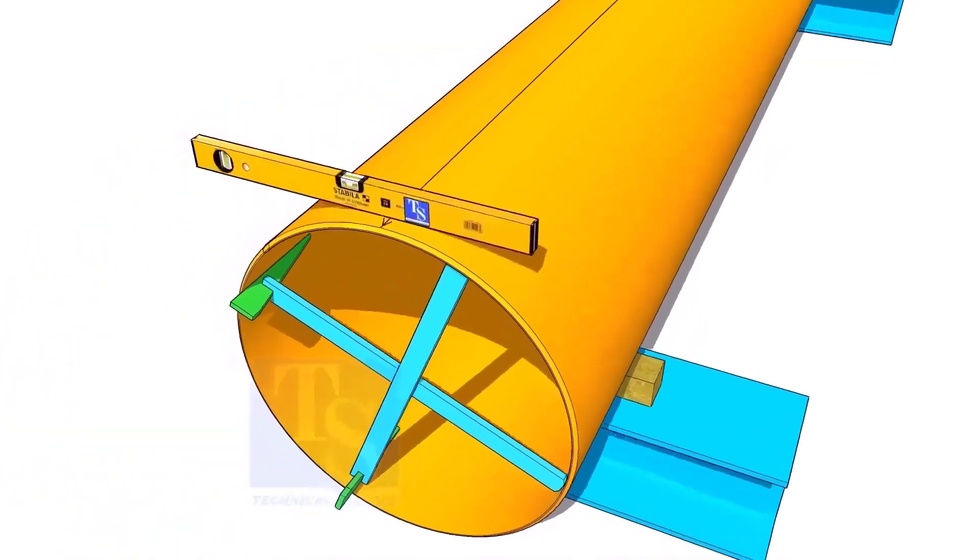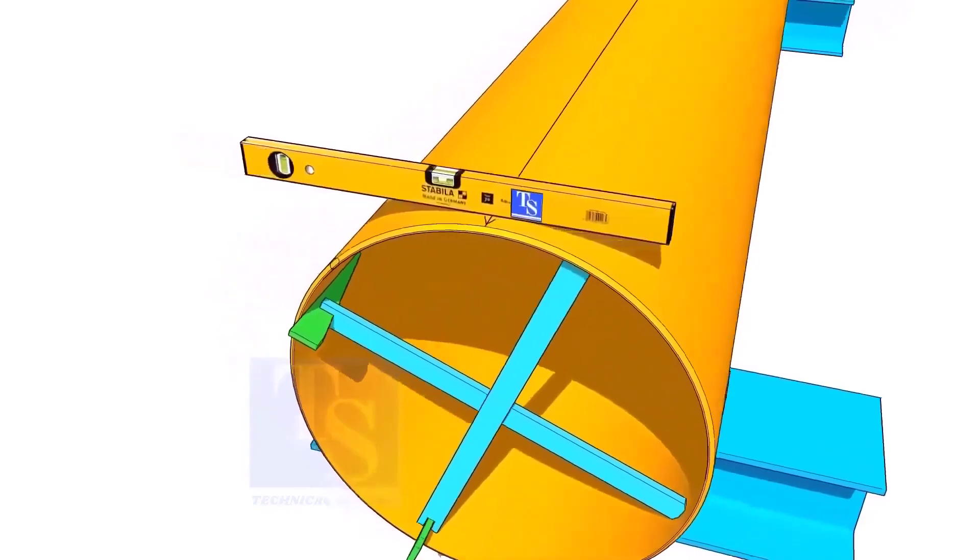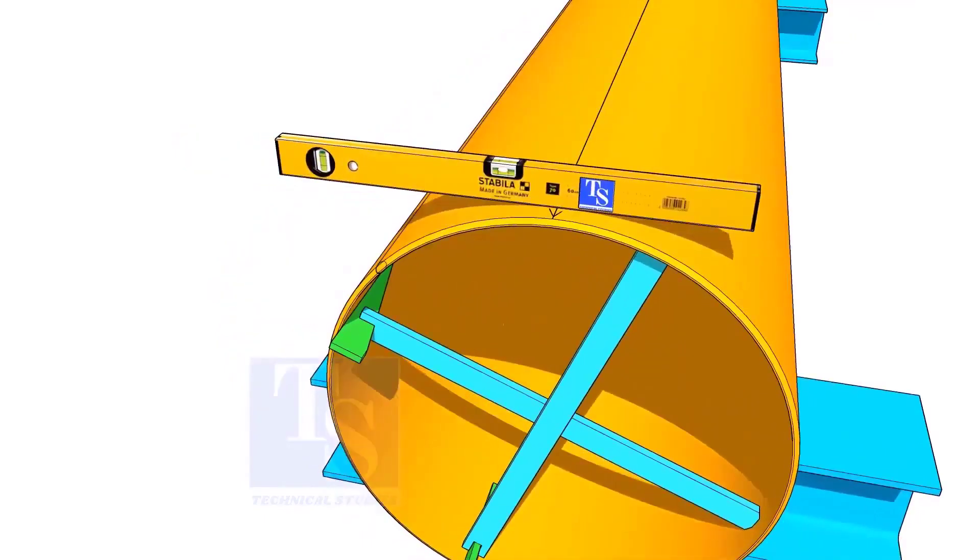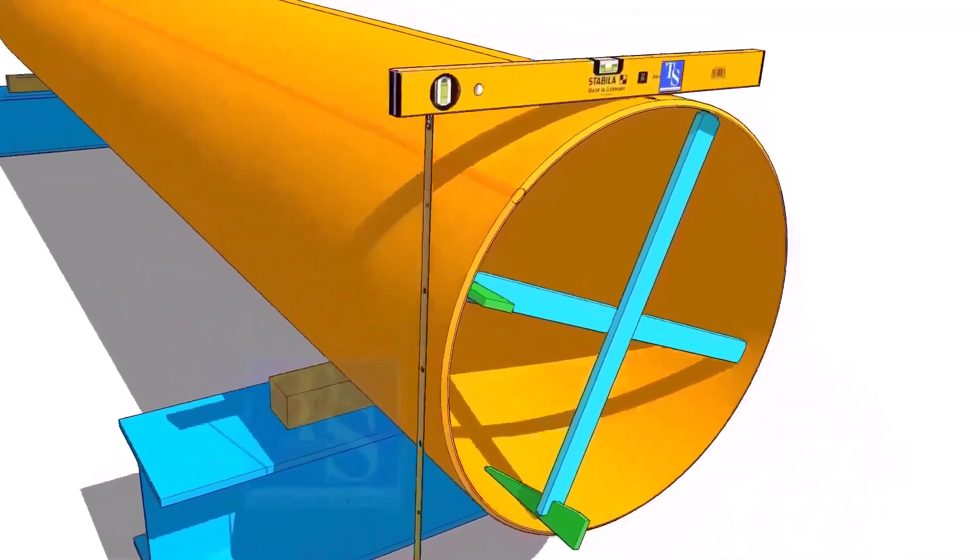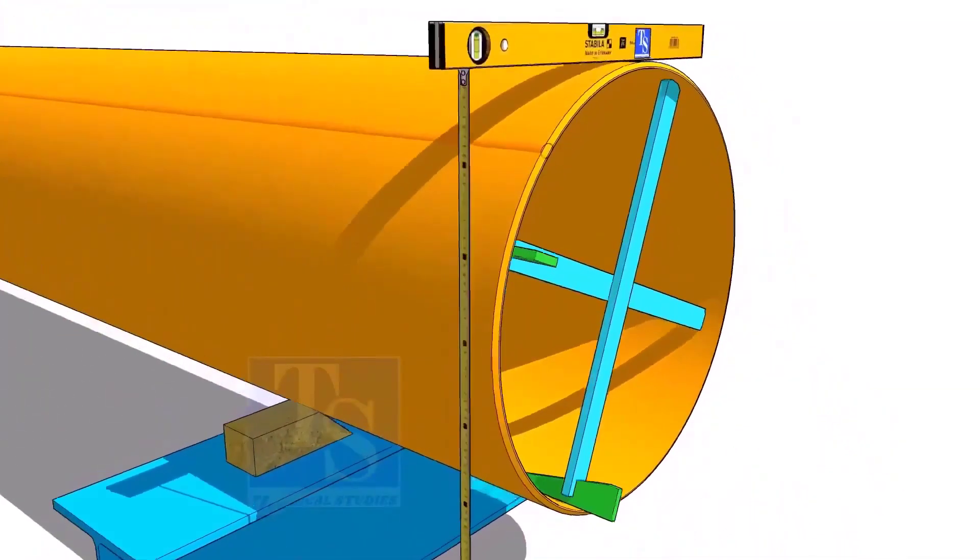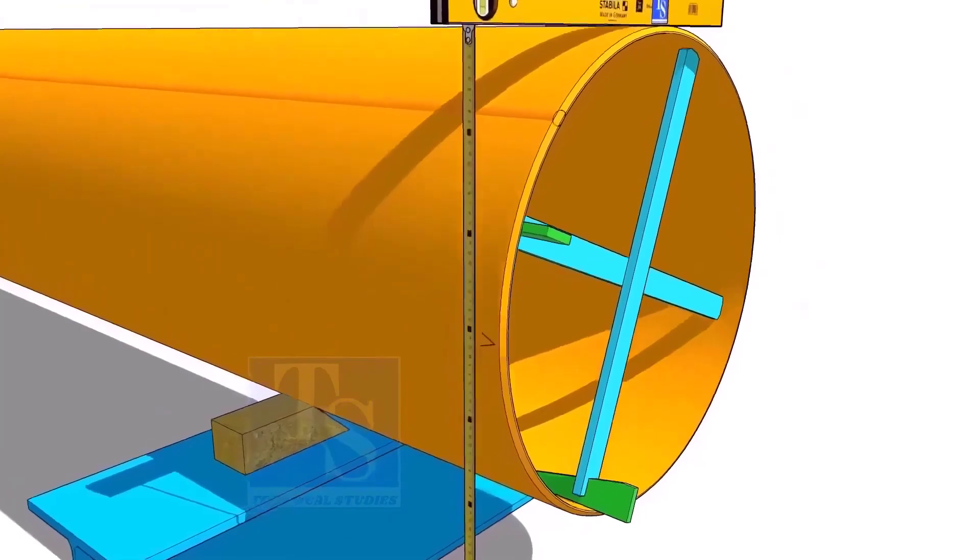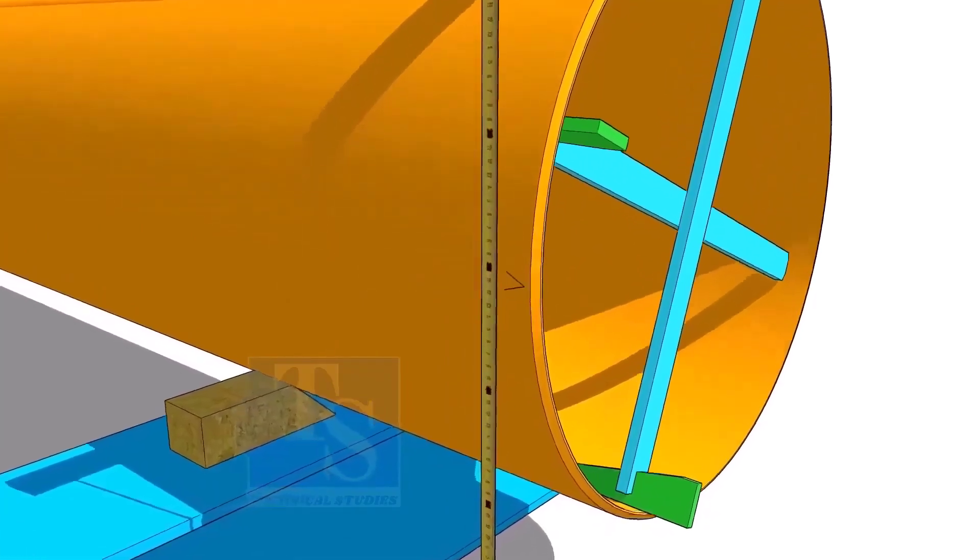Another method to mark the center line is, hold the level bottle horizontal and mark half OD on the side of the pipe. The advantage of this method is you can mark two opposite center lines at the same time.